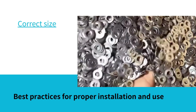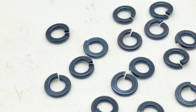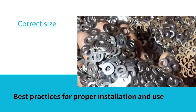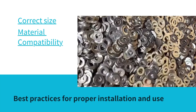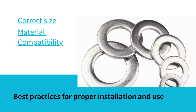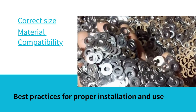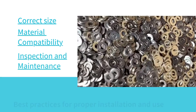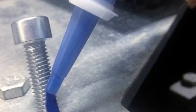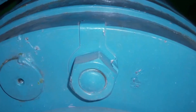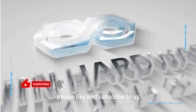Best practices for proper installation and use. Correct size: make sure the inside diameter of the washer matches the diameter of the fastener and that the outside diameter is appropriate for the application — proper sizing ensures effective load distribution and tension maintenance. Material compatibility: consider the environment in which the fastener will operate and select a washer material compatible with the fastener and the material being fastened, to prevent corrosion and material incompatibilities. Inspection and maintenance: regularly inspect connections using washers, especially in critical applications. Make sure the washers are still in place and fasteners maintain proper tension; replace worn or damaged washers promptly. If you are interested in our videos, please like and subscribe to us.